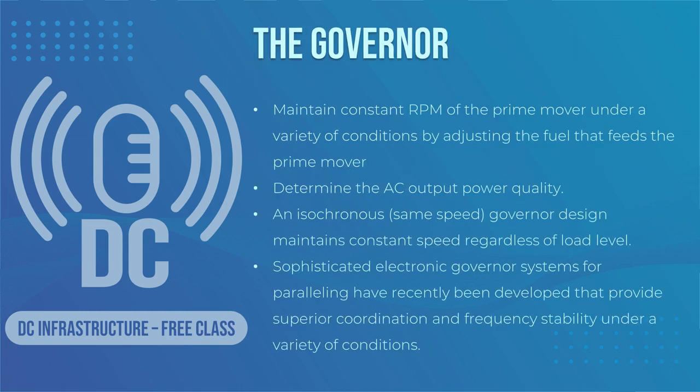The governor is a key component in determining the AC output power quality. It maintains constant RPM of the prime mover under a variety of conditions by adjusting the fuel that feeds the prime mover. Many system designs exist, from simple spring types to complex hydraulic and electronic systems that dynamically adjust the fuel throttle to keep the engine at constant RPM. A stable AC frequency is required and is directly proportional to the accuracy and response time of the governor. Frequency variation is not a problem when connected to a stable utility grid, but sensitive electronics are vulnerable to disruption due to abrupt changes in frequency under the influence of generator power. The generator's capability to produce a constant frequency is directly proportional to the RPM speed of the prime mover, which is controlled by the governor.